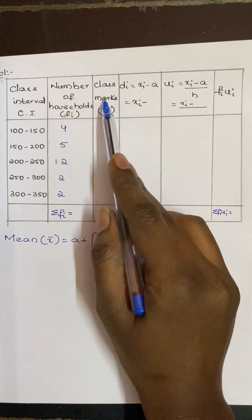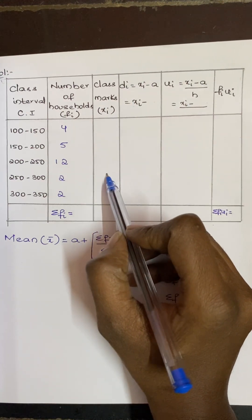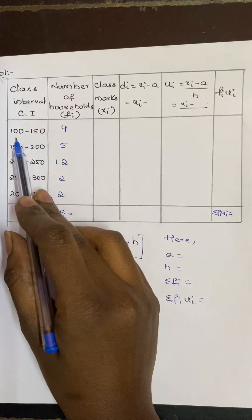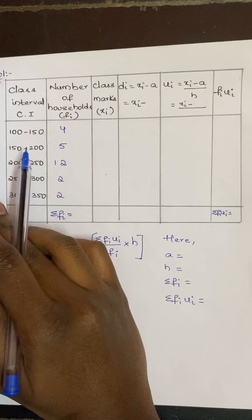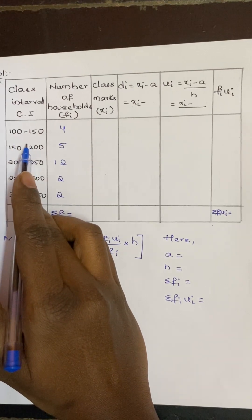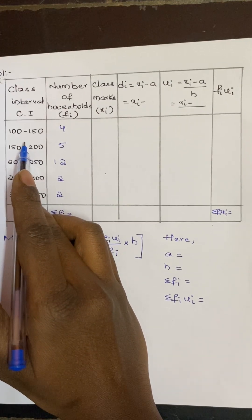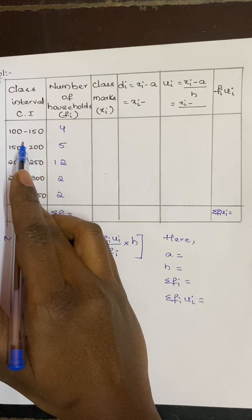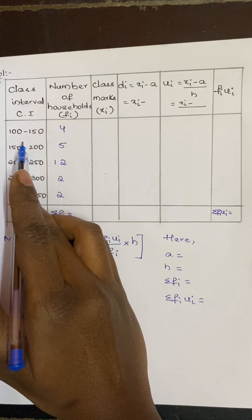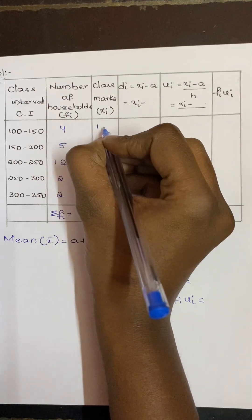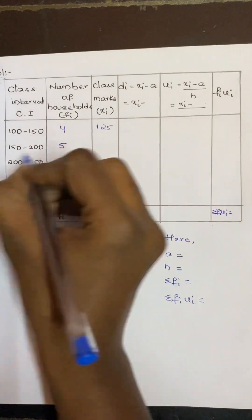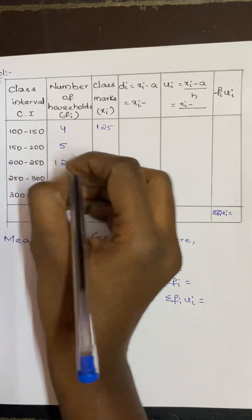So here what are the class marks? As we have seen in the earlier two classes, class marks is nothing but adding the first and second values and dividing it by 2. So adding 100 and 150, we get 250. So 250 divided by 2 is 125. Next, 150 plus 200 divided by 2 is 175.